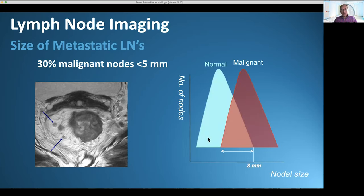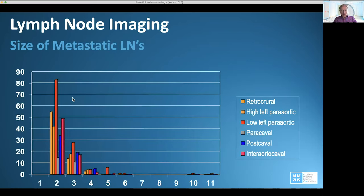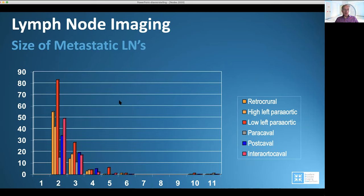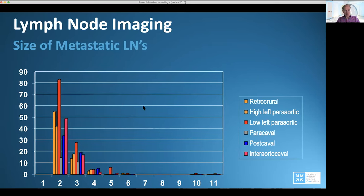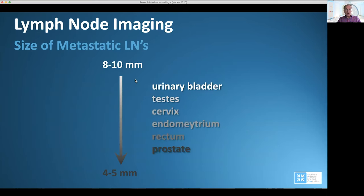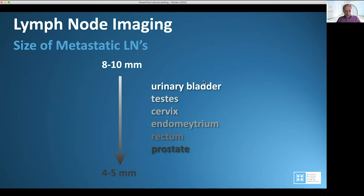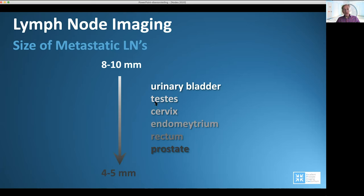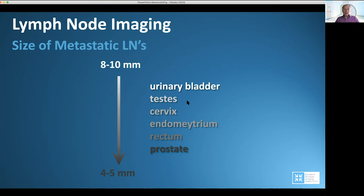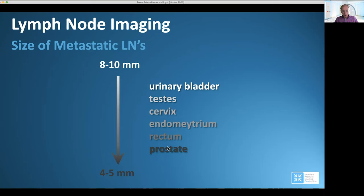This is the normal lymph node size versus the malignant lymph node size, and you can see that there is a significant overlap. Below eight millimeters, lymph nodes can be pathologic. The size of metastatic lymph nodes is below five millimeters — quite significant. Not all tumors have small lymph node metastases: urinary bladder and testicular cancer have large lymph nodes when metastatic, whereas rectum and prostate have small lymph node metastases.